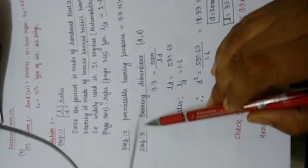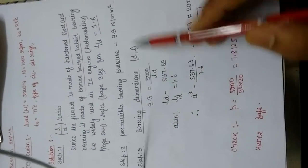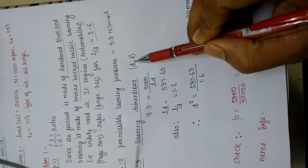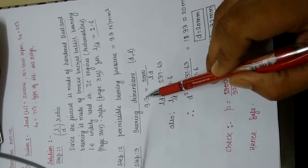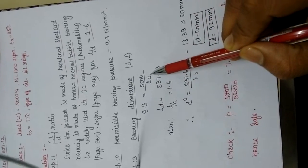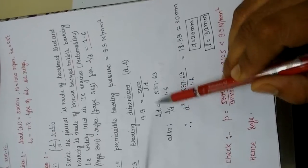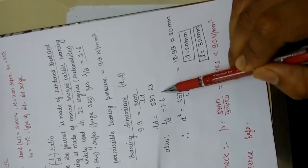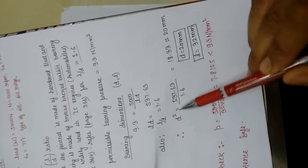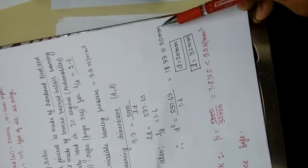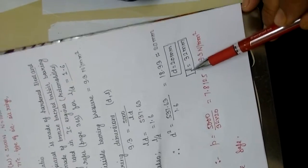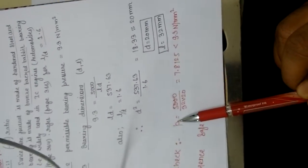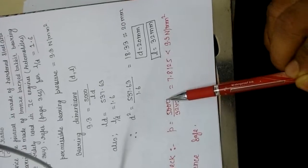Step 3 is bearing dimensions — finding the diameter of the journal (D) and length of the bearing (L). P equals W divided by projected area, where projected area = L × D. Here L × D = 537.63 and L/D = 1.6. From these two equations, D = 18.33 mm, which we round up to 20 mm. So if D = 20 mm, then L = 32 mm.